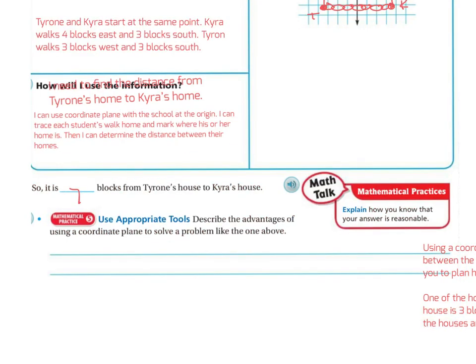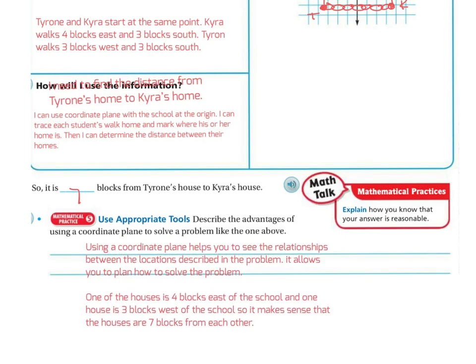Sorry, my screen got a bit messed up, but hopefully you have those answers. Describe the advantage of using a coordinate plane to solve problems like these. Using the coordinate plane helps you see the relationships between the locations described in the problem — it allows you to plan and solve the problem. One house was four blocks east of the school and one was three blocks west, so it makes sense the houses are seven blocks from each other. You can do the rest of the problems on your own or with a partner. Good luck.